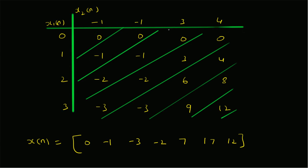To find the convolution sequence values, we draw diagonals from right to left across the table and add the elements along each diagonal. For x(0) we get 0, for x(1) we get 0 + (-1) = -1, for x(2) we get 0 + (-1) + (-2) = -3, and so on. We can also verify that the convolution sequence has exactly 7 elements, since the length equals length of signal 1 + length of signal 2 - 1 = 4 + 4 - 1 = 7. The result x(n) = {0, -1, -3, -2, 7, 17, 12}. Thanks for watching.